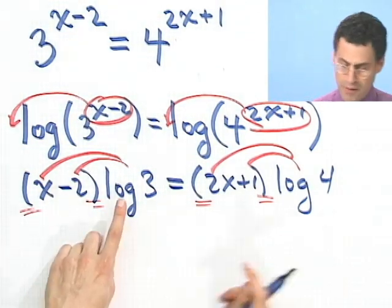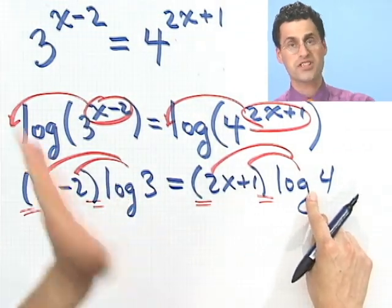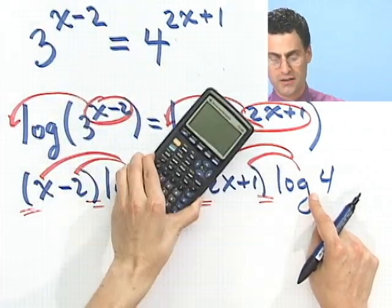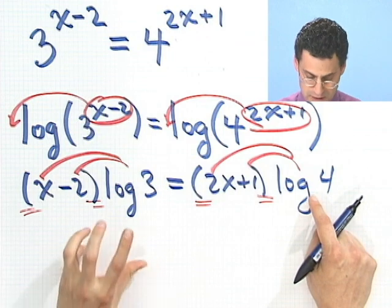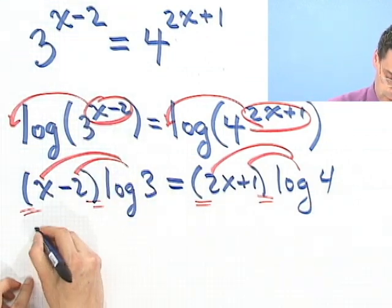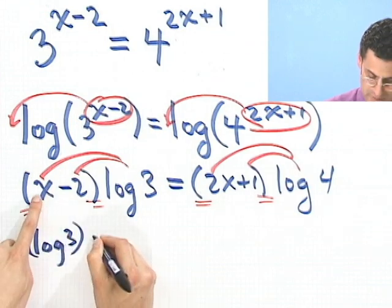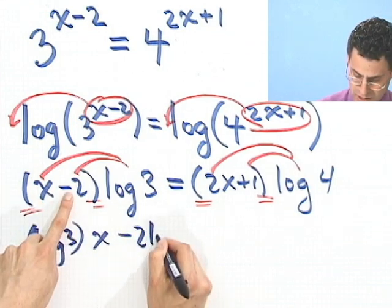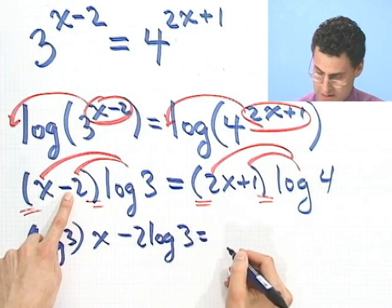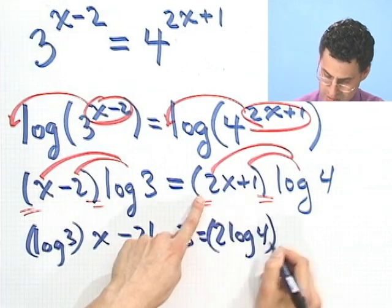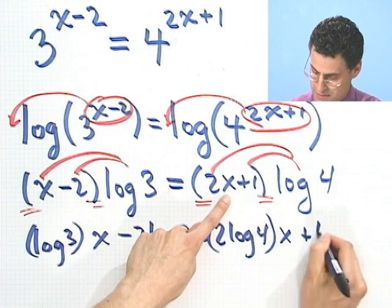If I do distribute, and remember log 3 and log 4, they're just some numbers. I don't know exactly what they are numerically. I can use a calculator and figure them out, not a problem. But they are numbers. So if I distribute, I see log 3 times x minus 2 log 3 equals 2 log 4 times x plus log 4.